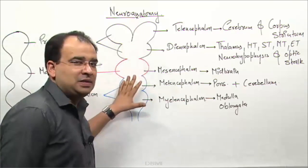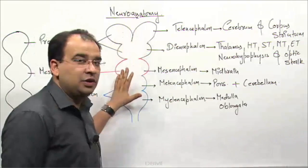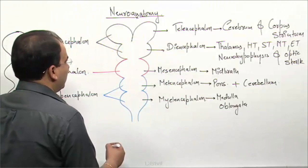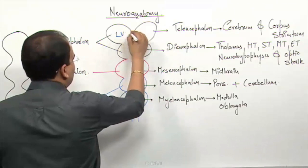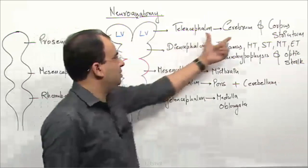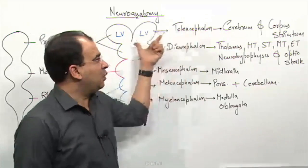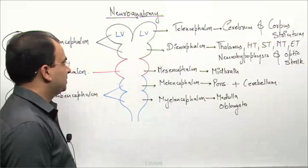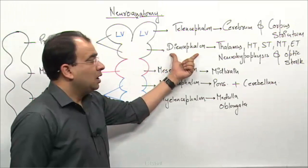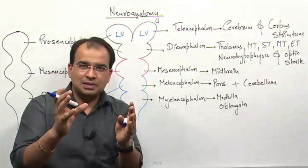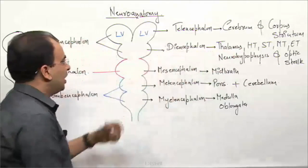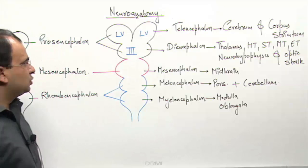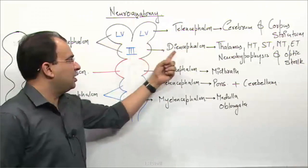The spaces inside the cranial end of the neural tube will form the ventricles. The cavity of the telencephalon will give rise to the lateral ventricle, since the cerebrum is formed by the telencephalon and the lateral ventricle is present within the cerebrum. The third ventricle is present mainly between the two thalami, and since the thalamus is derived from the diencephalon, the cavity of the diencephalon will give rise to the third ventricle.